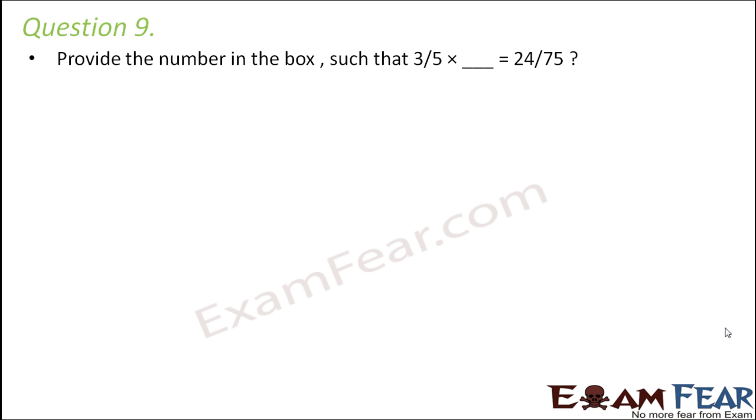Question number 9. Provide the number in the box such that 3/5 multiplied by dash is equal to 24/75. Now what have we learnt? We learnt that whenever we multiply two fractions we multiply the numerators and we multiply the denominators. So basically what happens is numerator multiplied by numerator gives the numerator of the product. Similarly denominator multiplied by denominator gives the denominator of the product. So that is the simple rule that we follow.